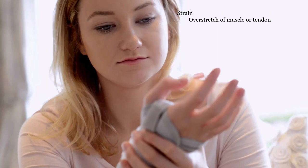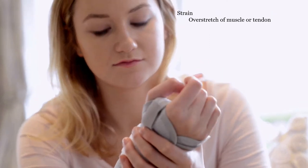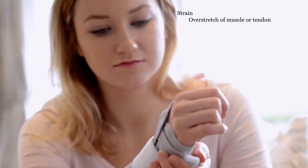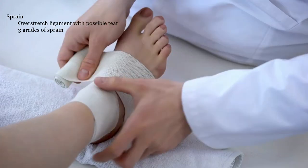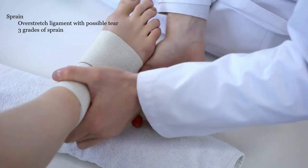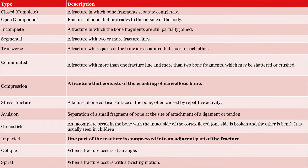A strain is overstretching a tendon or a muscle or both. A sprain is injury of the ligaments with possible tearing; there are three types. There are different types of bone breaks to know. Here is a table to study the types of fractures. Using index cards, you can make flashcards from this table to help you remember the fracture types for the exam.